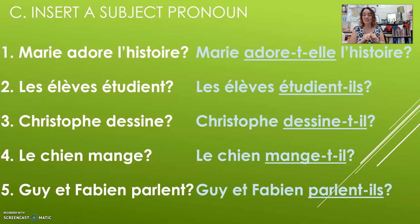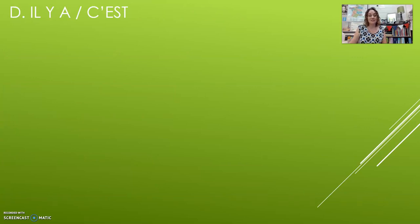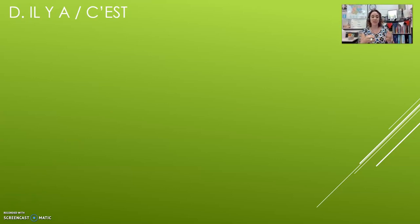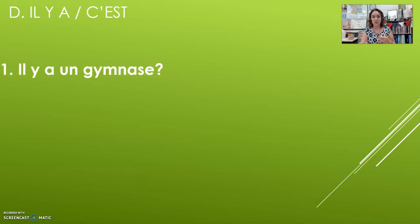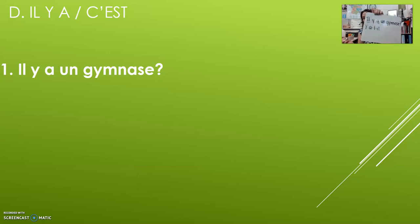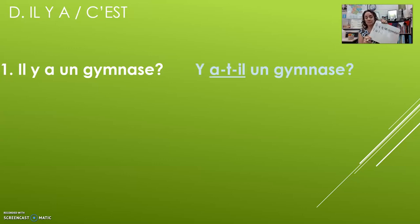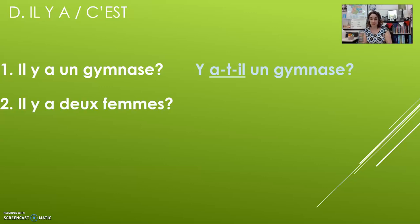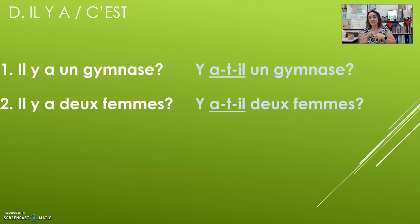The very last section is kind of easy once you get the hang of it: «il y a» and «c'est». The phrase «il y a» means there is / there are. When you invert it, it's like saying «is there / are there». So «Il y a un gymnase» — is there a gymnasium? You flip «il» and «a», the «y» goes in front, and you insert a T: «Y a-t-il un gymnase?» Try «Il y a deux femmes» — «Y a-t-il deux femmes?» — «Y a-t-il» is the phrase for «is there / are there».